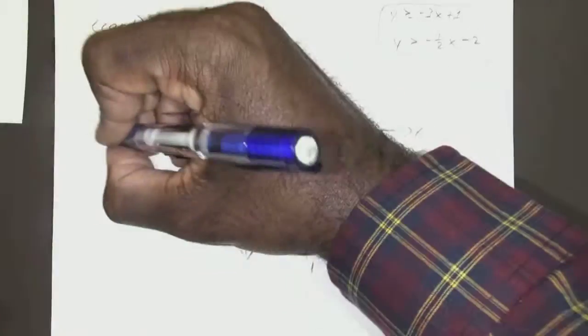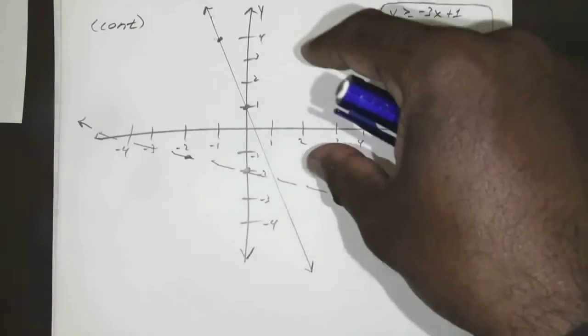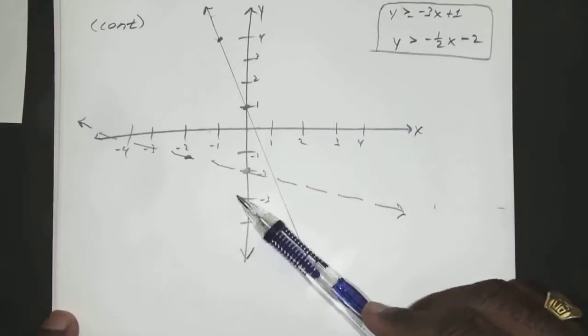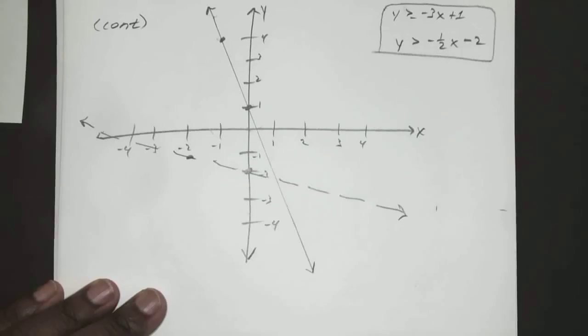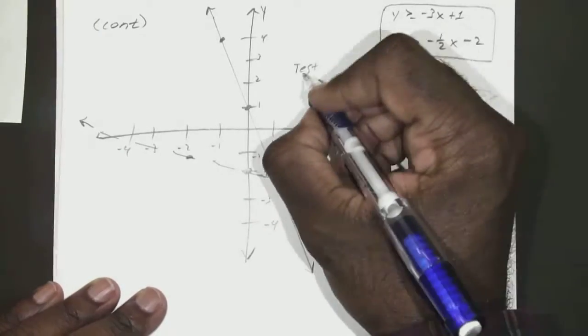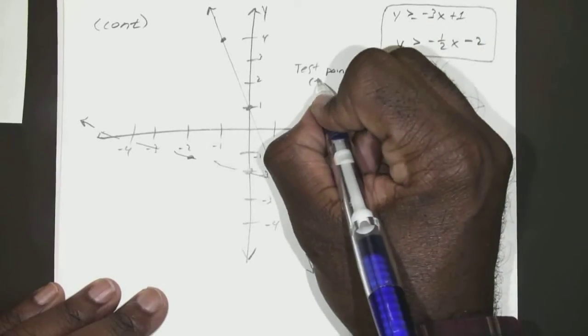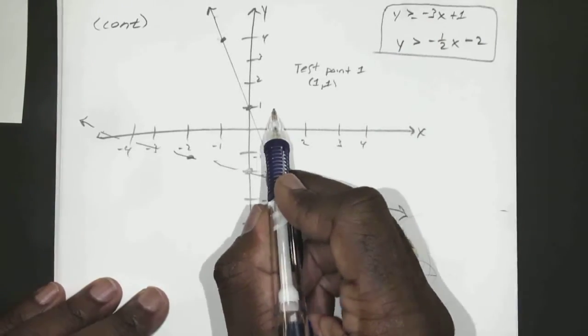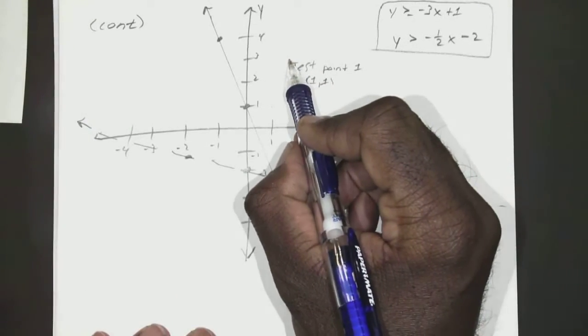Okay. So, we have our dotted line. So once we graph those two, we now have four possible sections. We have this section, this section, this section, and this section. We have to pick a test point out of each one of them. So, for this one, we'll pick, we'll say test point 1, we'll make it 1, 1. Since 1, 1 is right there and it's in that first section. You could have picked any test point you want.